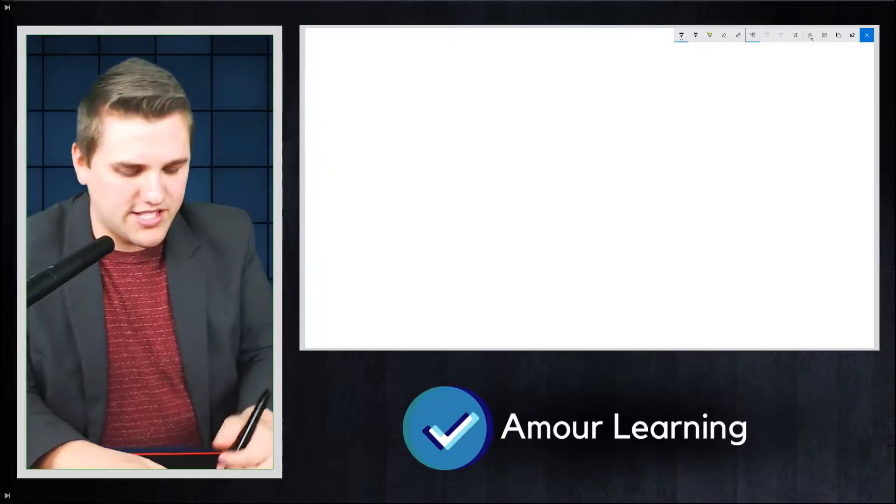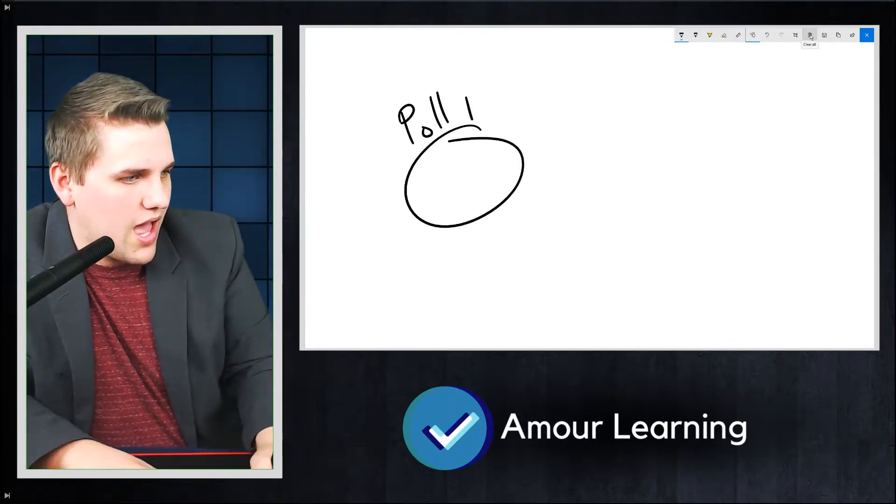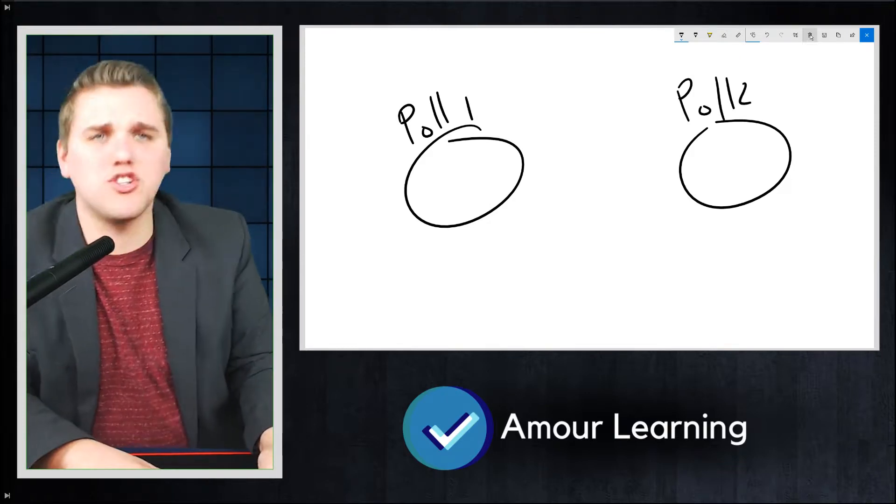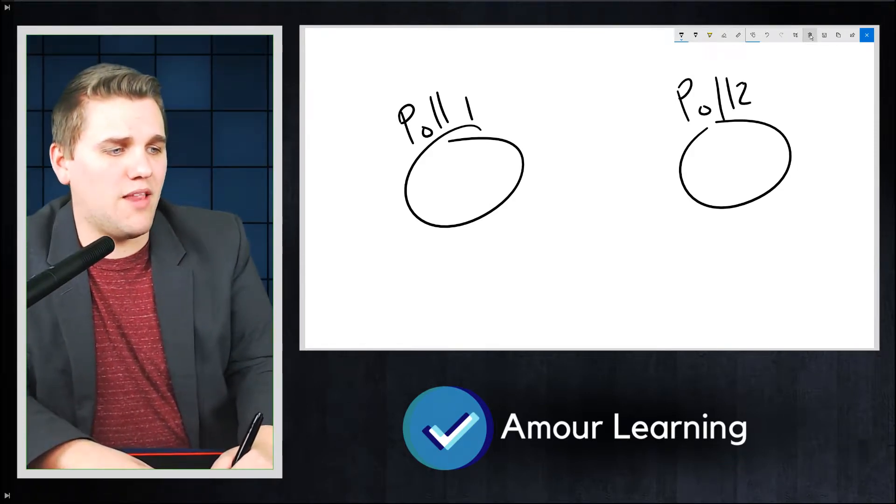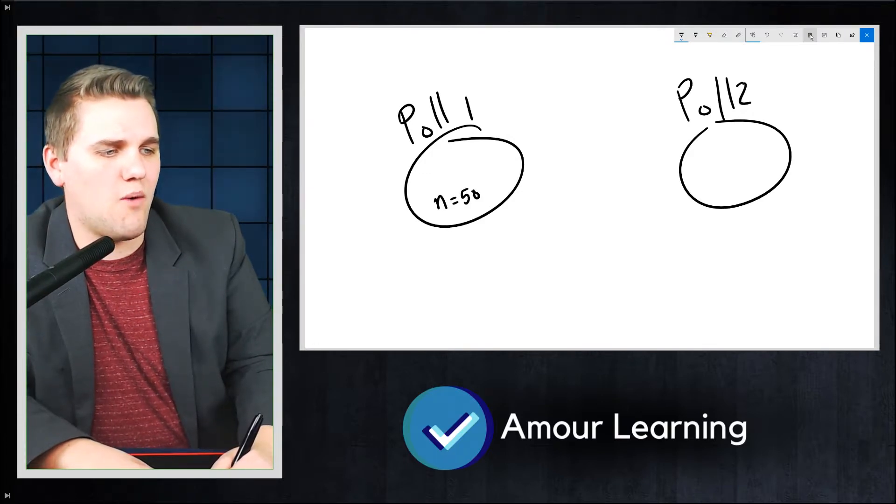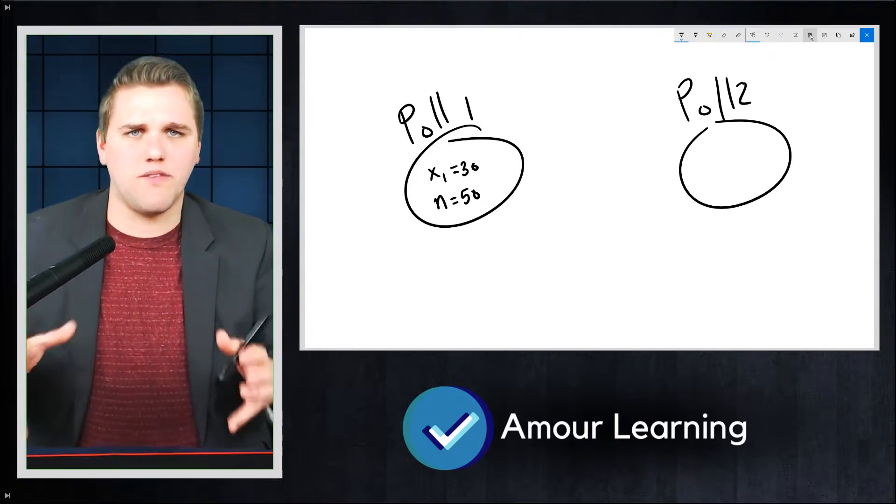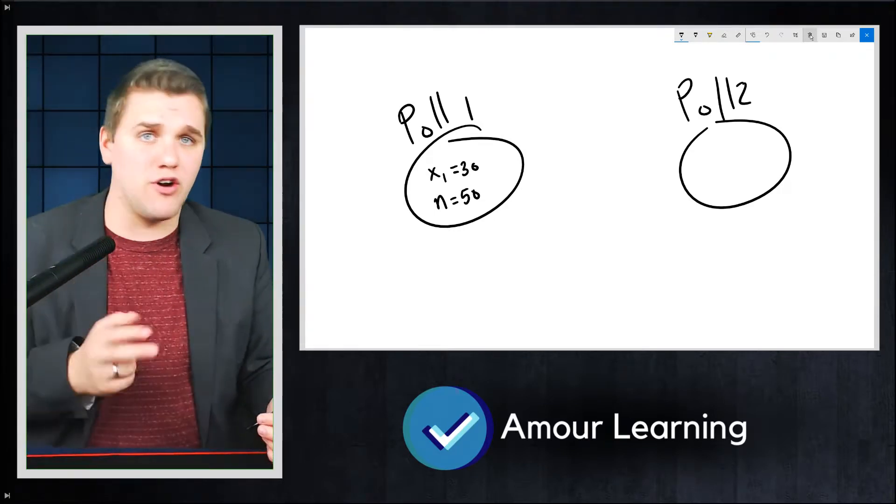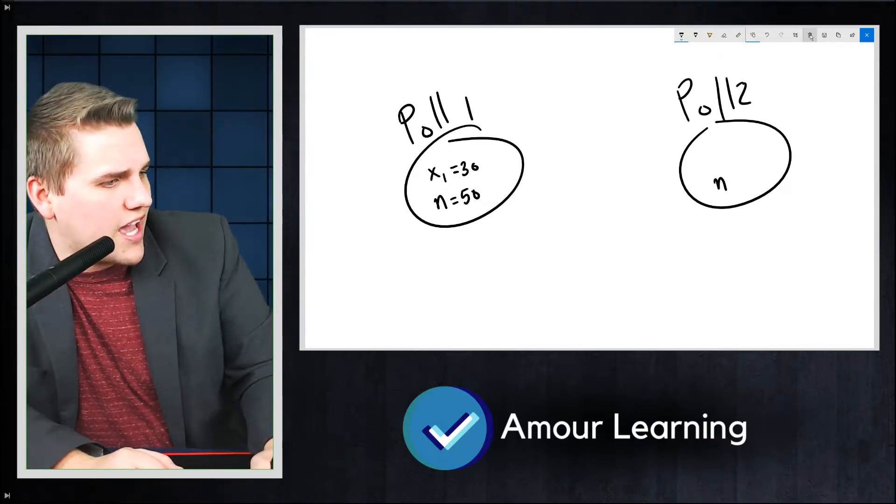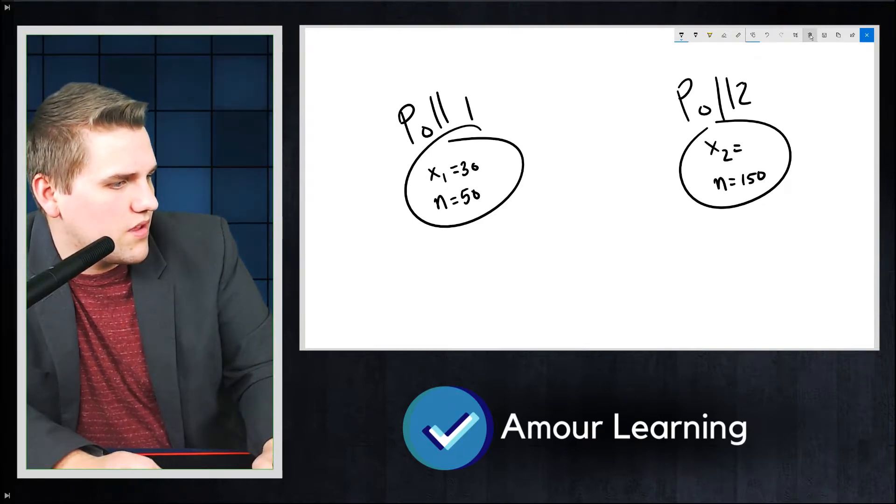Let me give you another example. Let's say you have two polls, poll one and poll two, and they're both measuring the same thing. Poll one measures a total of 50 people, and they find the number of successes, which we'll call X1, is 30. Maybe they're trying to figure out what proportion of the population is Republican. They sample 50 people and find 30 are Republican. But poll two takes 150 people and finds that 70 are Republicans.